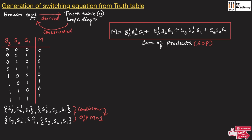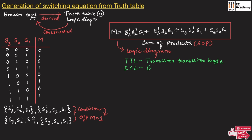This is how we derive a switching equation or Boolean equation from a given truth table. Whenever a truth table is given, it defines a problem to be solved. Using the truth table we write the Boolean equation, which can be simplified, and then a logic diagram can be constructed. The logic diagram can be implemented using three main digital integrated circuit families: TTL (transistor-transistor logic), ECL (emitter coupled logic), and CMOS (complementary metal oxide silicon).